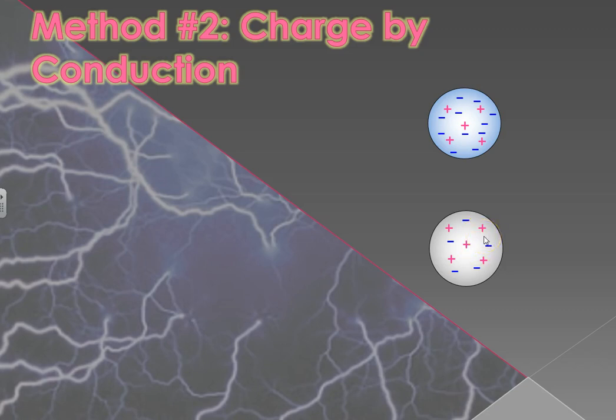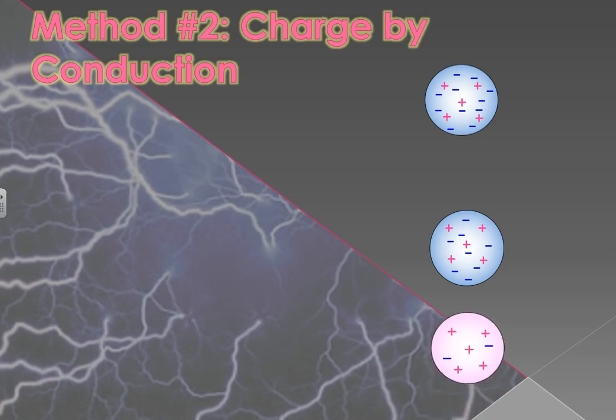Six extra electrons repelling each other in a confined space. Really, having three of them move away and three of them stay is going to be the most equitable charge distribution they can think of, given how much they hate each other and want to repel each other. The result? Charge.